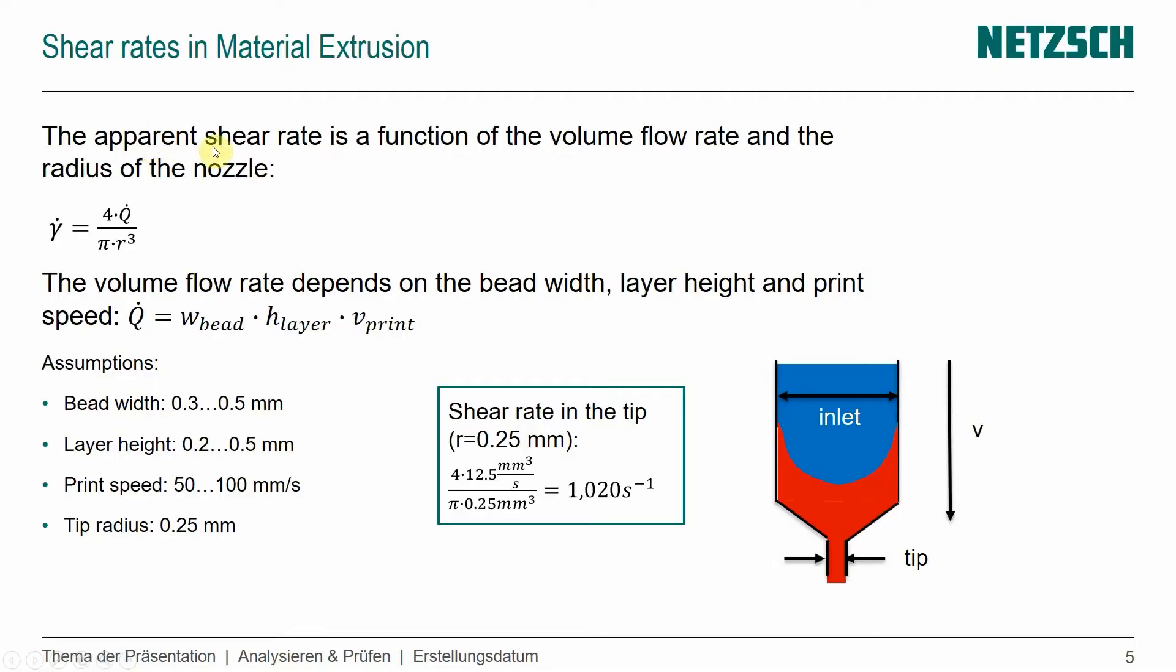So how do we actually calculate that? You've seen in the previous video some of the equations, and I'm using a simplified approach here. The apparent shear rate is a function of the volume flow rate, so how much material comes out in a given time, and the radius of the nozzle. So the shear rate is a function of this volume flow rate, Q dot, and has an effect of the radius cubed.